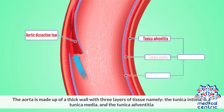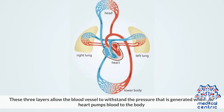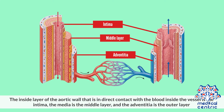The aorta is made up of a thick wall with three layers of tissue: the tunica intima, the tunica media, and the tunica adventitia. These three layers allow the blood vessel to withstand the pressure that is generated when the heart pumps blood to the body. The inside layer of the aortic wall in direct contact with the blood is the intima, the media is the middle layer, and the adventitia is the outer layer.